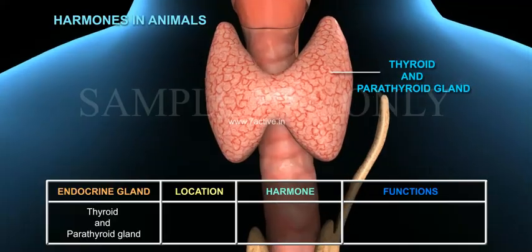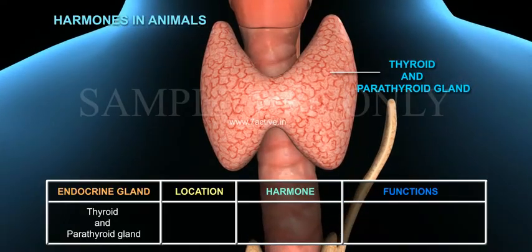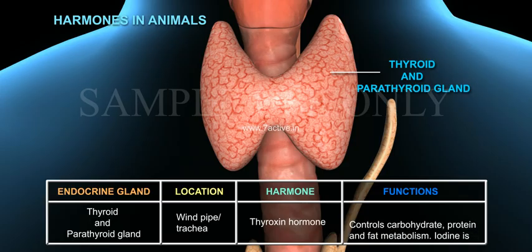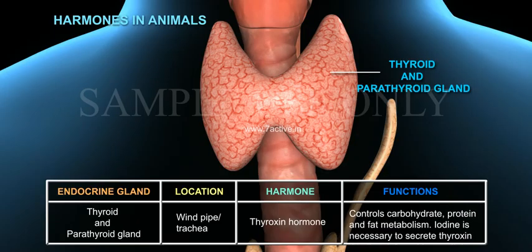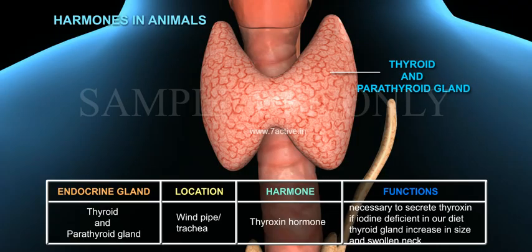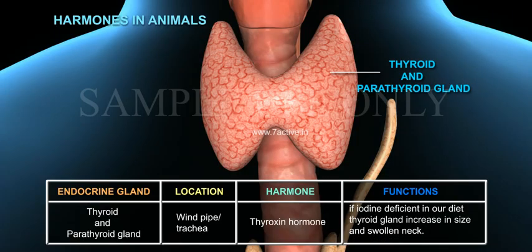The Thyroid and parathyroid gland is located near the windpipe, or trachea. Its hormone is thyroxin, which controls carbohydrate, protein, and fat metabolism. Iodine is necessary to secrete thyroxin. If iodine is deficient in our diet, the thyroid gland increases in size, resulting in a swollen neck.